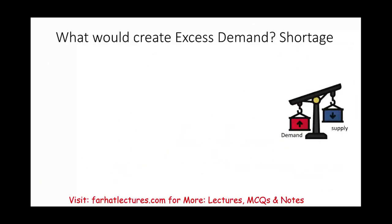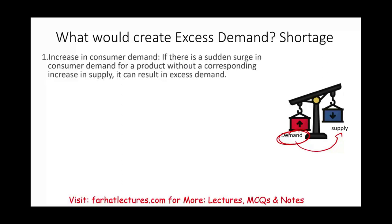Now let's talk about shortage or excess demand. When would that happen? When we have more demand for something than we can supply. What could create a shortage? An increase in consumer demand — suddenly there's a surge in consumer demand for a particular product with no corresponding increase in supply. For example, during COVID, what happened to masks? We had a sudden increase in consumer demand for masks. There were not enough masks, and if you wanted to buy them, you'd have to pay four, five, six times the regular price.